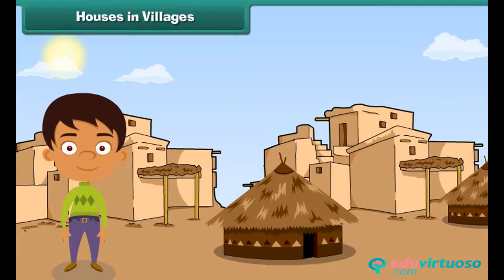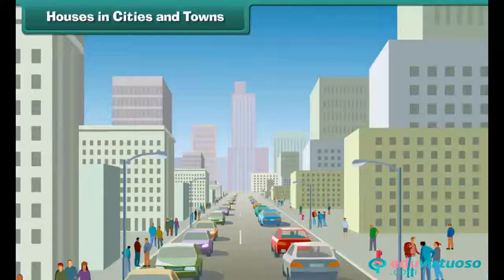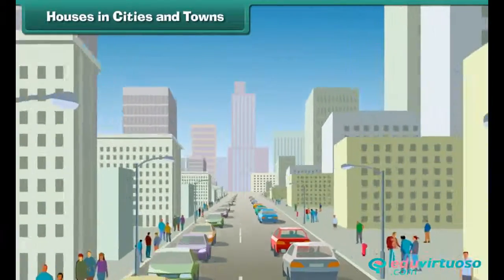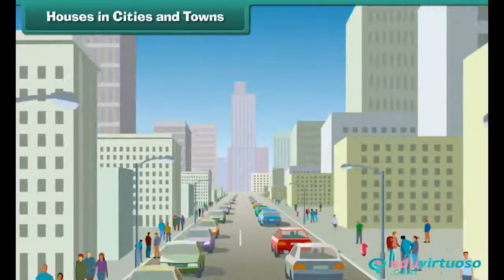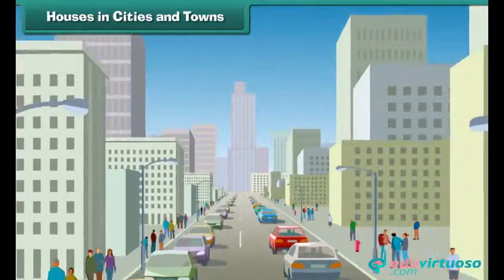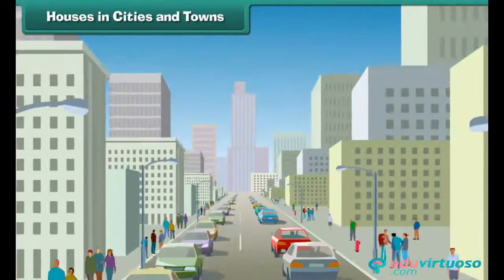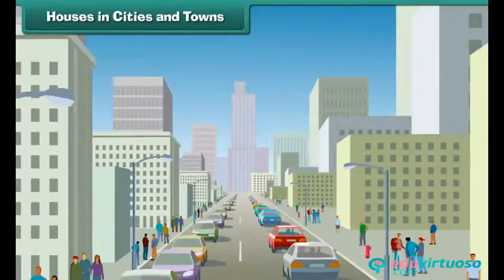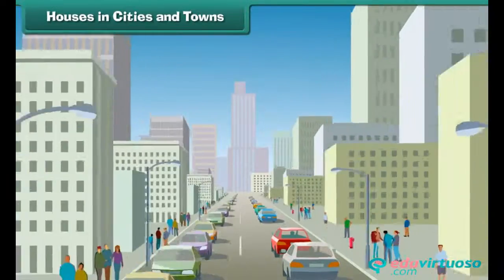Houses in villages are made of mud, clay, straw, and bushes. They are called huts. In towns and cities, houses are built of bricks and cement. They are either single or multi-storied. Many different families live in these multi-storied buildings.